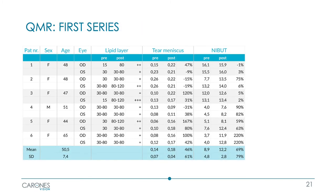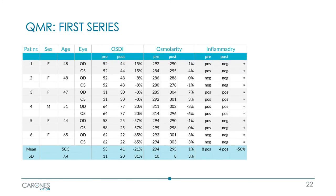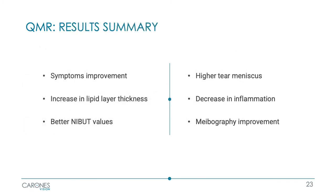This is a table showing the results obtained with the first six patients treated. As the number of patients increased, we obtained the same results that have been maintained over time. In summary, we found an improvement of symptoms and an increase in the thickness of the lipid layer.